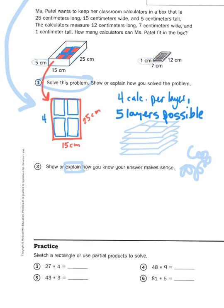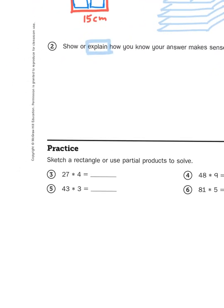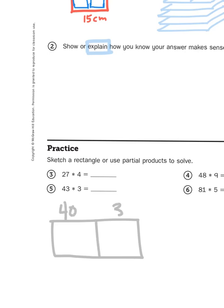Lastly, down at the bottom, we have some multiplication problems. And wait! They're multi-digit. Two-digit multiplication. It says, sketch a rectangle or use partial products to solve. We haven't gotten to partial products yet. We just learned partitioning rectangles. But since I do know how to use partitioning rectangles, let's use them. I'm going to do number five. Forty-three times three.